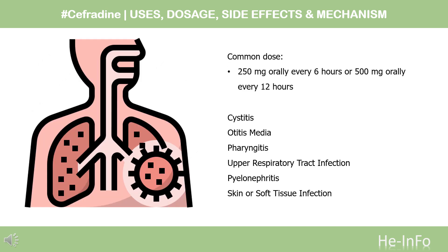Dose. The dose of this medicine will be different for different patients. Usual adult dose for cystitis — uncomplicated: 500 mg orally every 12 hours; complicated: 500 mg orally every 6 hours or 1g orally every 12 hours. Usual adult dose for otitis media: 250 mg orally every 6 hours or 500 mg orally every 12 hours. Usual adult dose for pharyngitis and upper respiratory tract infection: 250 mg orally every 6 hours or 500 mg orally every 12 hours.